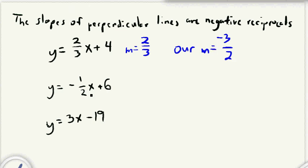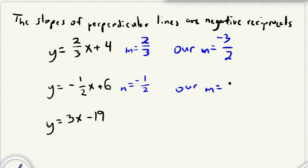Now let's look at another example. We're going to identify the slope of this equation — the slope is m — so the slope here is negative 1/2. For the perpendicular line, we're going to flip this, so it would be 2 over 1, but 2 over 1 is just 2. And since this is negative, our slope is going to be positive, so the slope of the line that's perpendicular to this one would be positive 2.